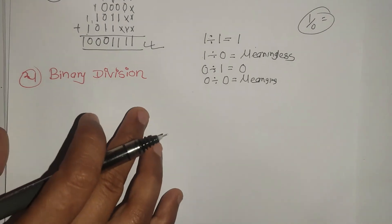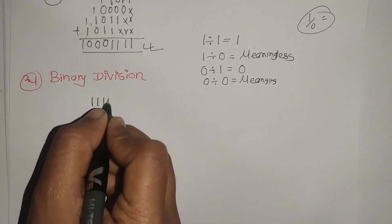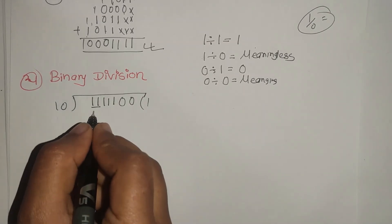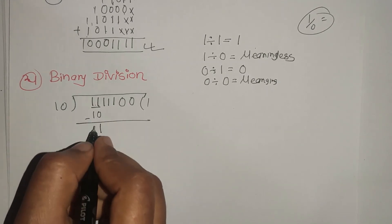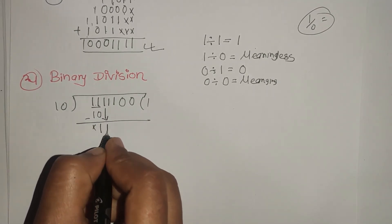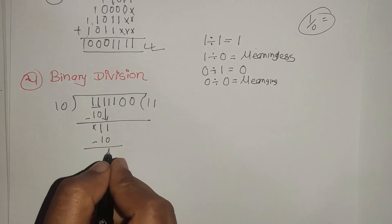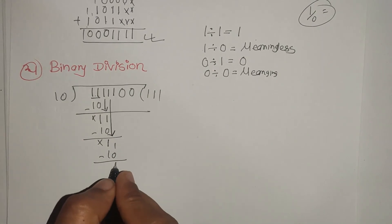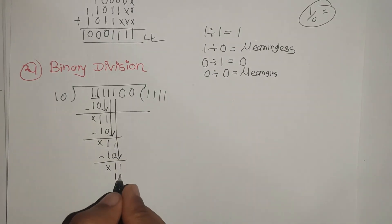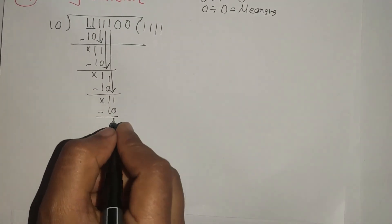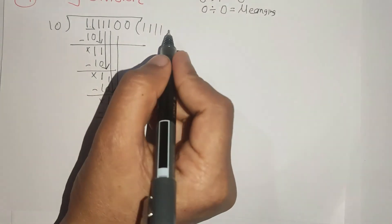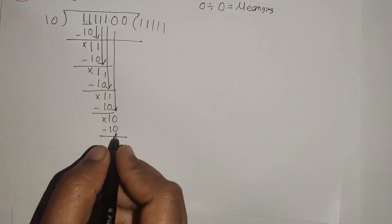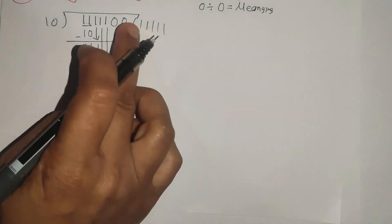Now let's look at binary division. 111100 divided by 10. Working through the division: 1 remaining 0, 1 is 1, 1 is 1, 1 is 1. The quotient bits are 1, 1, 0 with the division steps shown.